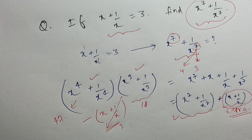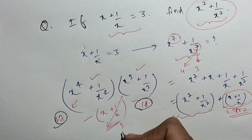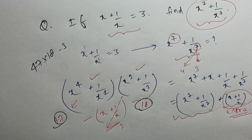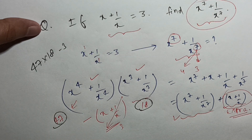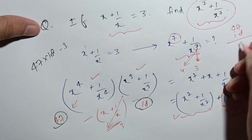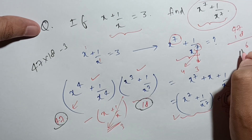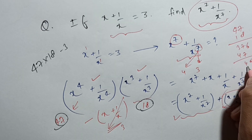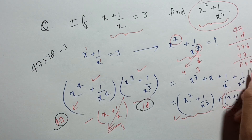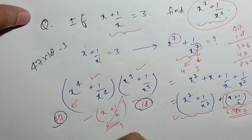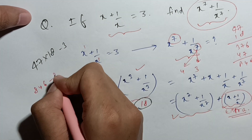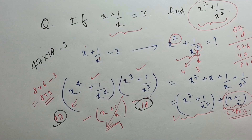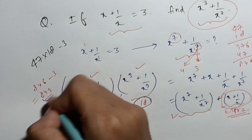Now I have all the parts. The result is x raised power 4 plus 1 upon x raised power 4 times x cube plus 1 by x cube, minus x plus 1 by x, which is 47 times 18 minus 3. Calculating 47 times 18 gives 846, and 846 minus 3 equals 843. So our final answer is 843.